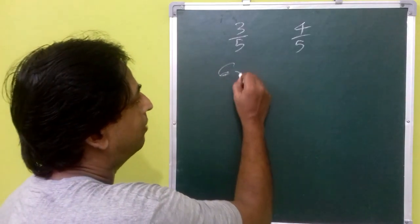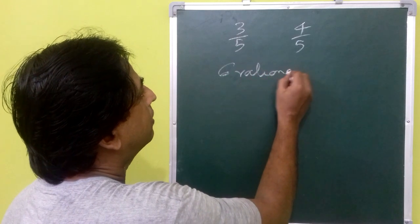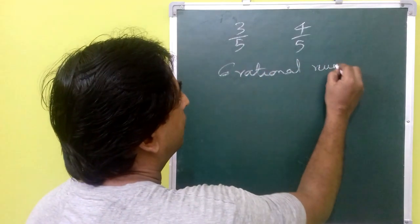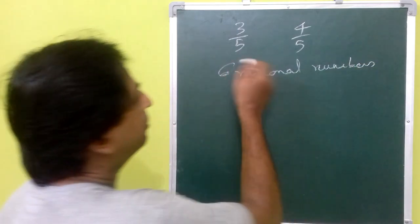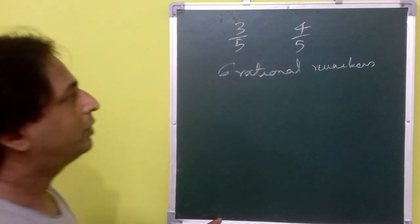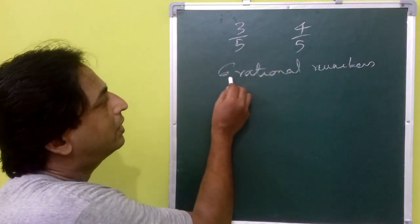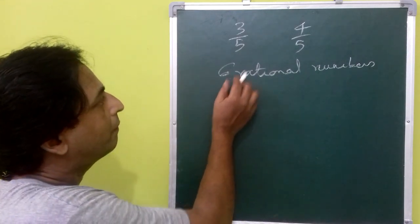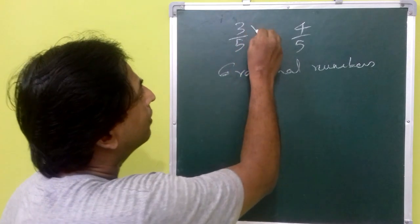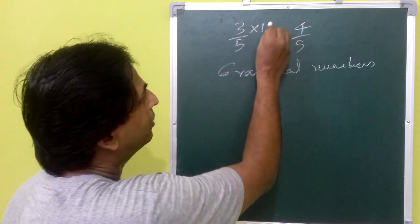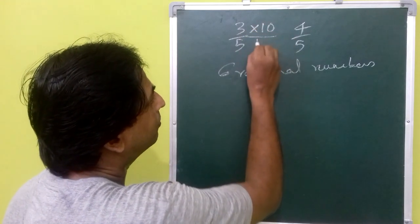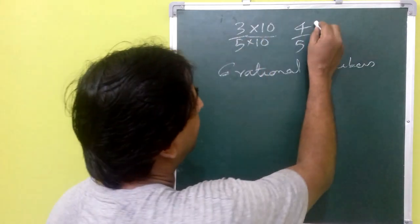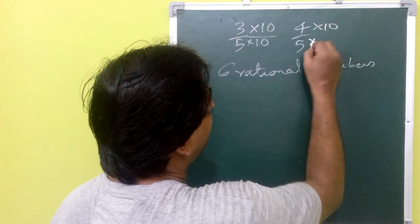In this next example, you need to find six rational numbers between 3/5 and 4/5. If you need to find six rational numbers, you will have to multiply by at least seven, but for easier multiplication you can multiply by ten.